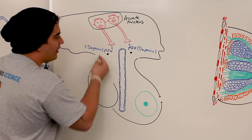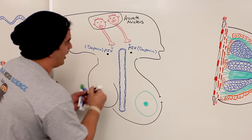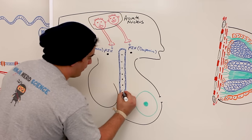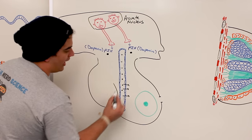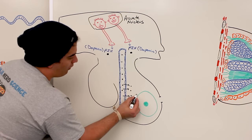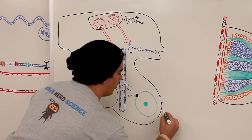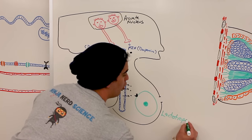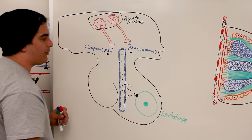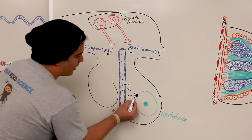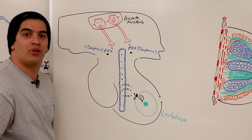Prolactin inhibiting hormone circulates down through the hypophyseal portal system and comes out into the anterior pituitary. When it gets into the anterior pituitary, it acts on receptors present on a cell called the lactotrope. This prolactin inhibiting hormone — dopamine — acts on D2 receptors, and the effect is that it inhibits this cell from releasing prolactin. So prolactin won't be released.